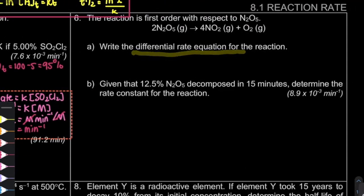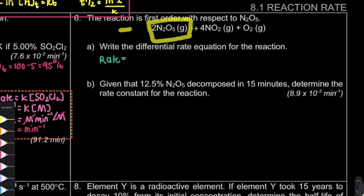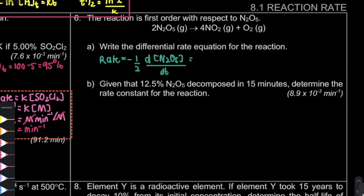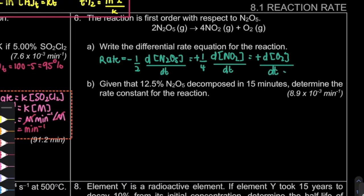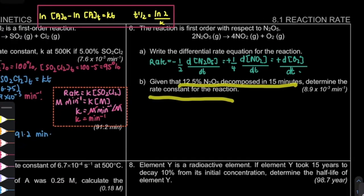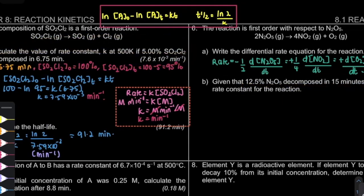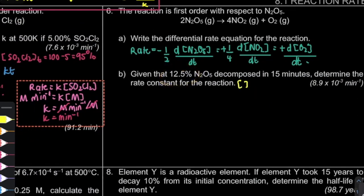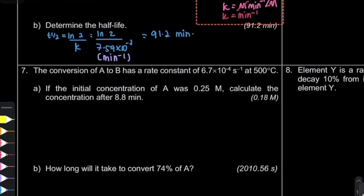For question 6, the differential rate equation: remember that for reactants the sign is negative, while for products it is positive. Don't forget to include the stoichiometric coefficient. For question B, the hint gives 12.5% decomposed, so what remains is 100 − 12.5 = 87.5%.